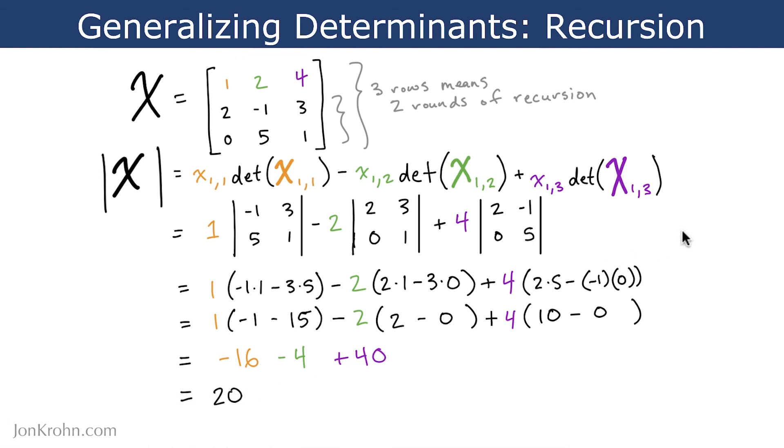Alright, so that does it. If you had even more, if you had an even larger matrix, then, you know, if we had a 4x4 matrix, you'd have to do three rounds of this style of recursion. But hopefully this gives you a sense of how this recursion works.